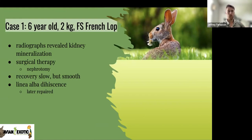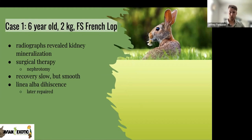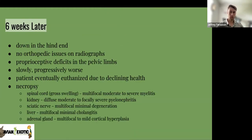First case: a six-year-old, two-kilogram female spayed French lop. Initially feeling sick; radiographs revealed kidney mineralization. The kidney disease appeared severe on one side but the other kidney looked okay, so surgical therapy was pursued to remove that kidney. Recovered slowly but surely, though there was dehiscence later repaired at the abdominal wall. Six weeks later, down in the hind end — no orthopedic issues on radiographs. There were proprioceptive deficits in the pelvic limbs, slowly and progressively getting worse despite supportive therapy. The patient was unfortunately eventually euthanized due to declining health.